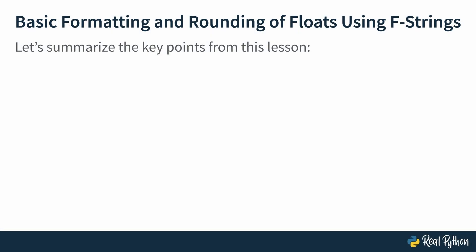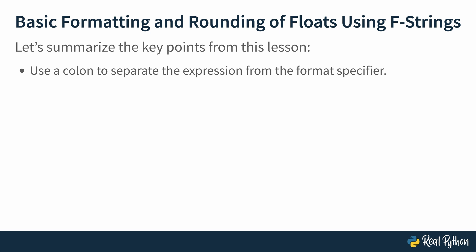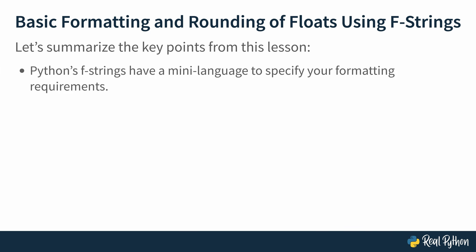Let's finish this lesson by summarizing the key points. You can add format specifiers after the expression you put within the braces in an f-string. The expression evaluates to some data that you want to display, and after the expression you put the format specifiers. You use a colon to separate the expression from the format specifier. Python's f-strings have a mini language to specify your formatting requirements — this is not something you need to memorize. If you use them often enough you start to remember many of them, or you know where to find them, such as in the documentation.